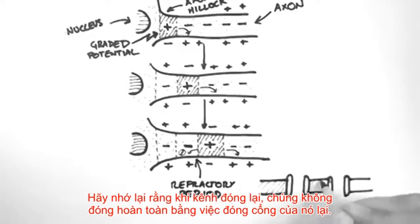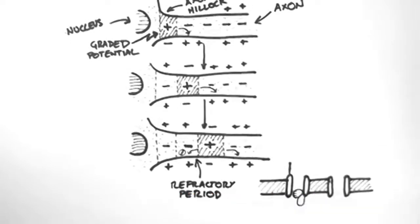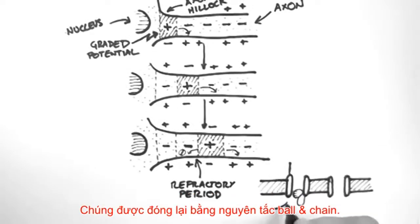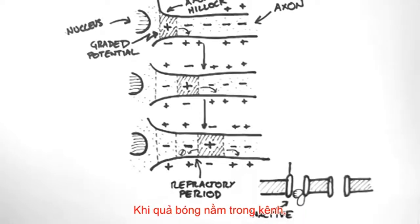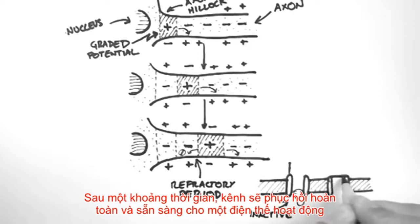Remember that when the channels close they don't actually close by flipping the gate shut. They close by this ball and chain mechanism. When the ball is in the channel, the channel is totally inactive and can't be triggered again. After some time the channels will reset entirely and then they will be ready for another action potential.